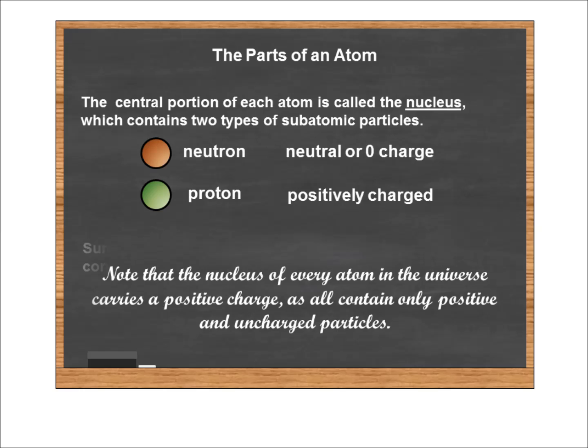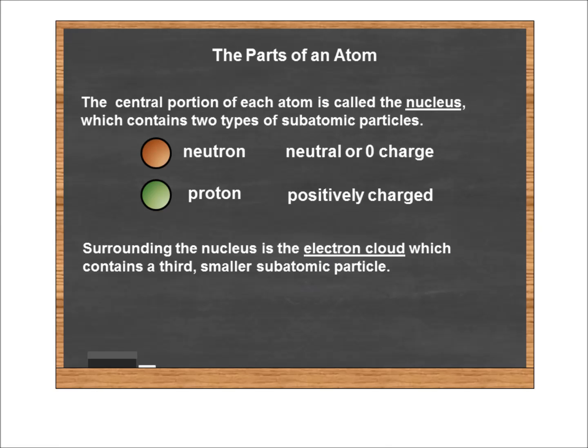Surrounding the nucleus is what's called the electron cloud, in which a third, much smaller subatomic particle called the electron is flying around the nucleus. These electrons carry an electrically negative charge, and these charges are going to be important as we go forward in other lectures.